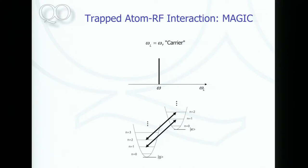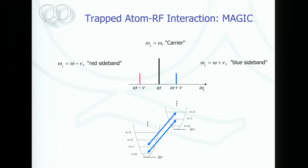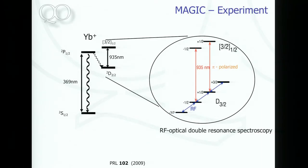Let's look at a real experiment. When we drive our ions, we have carrier transitions that only change the qubit, and sideband transitions that modify also the external motion. The smoking gun for coupling internal and external states is exactly these motional sidebands in an excitation spectrum of your ion. That's what I want to show you now — the first observation of these sidebands.